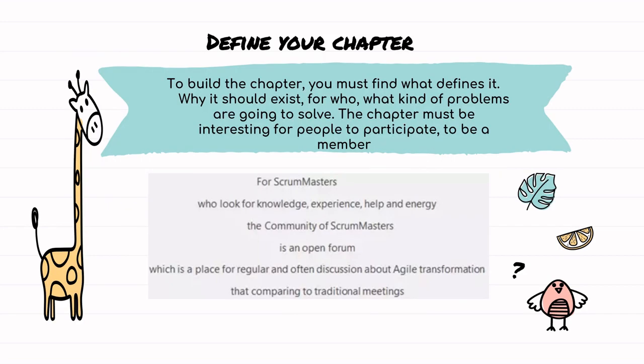When defining your chapter, every chapter needs a particular problem statement — what exactly they're going to do. To build a chapter, you must first find out what defines it: why it should exist, for whom, and what kinds of problems it will solve. The chapter must be interesting enough for people to want to participate. For example, a Scrum Master chapter should mention its vision — what exactly this chapter is going to do.